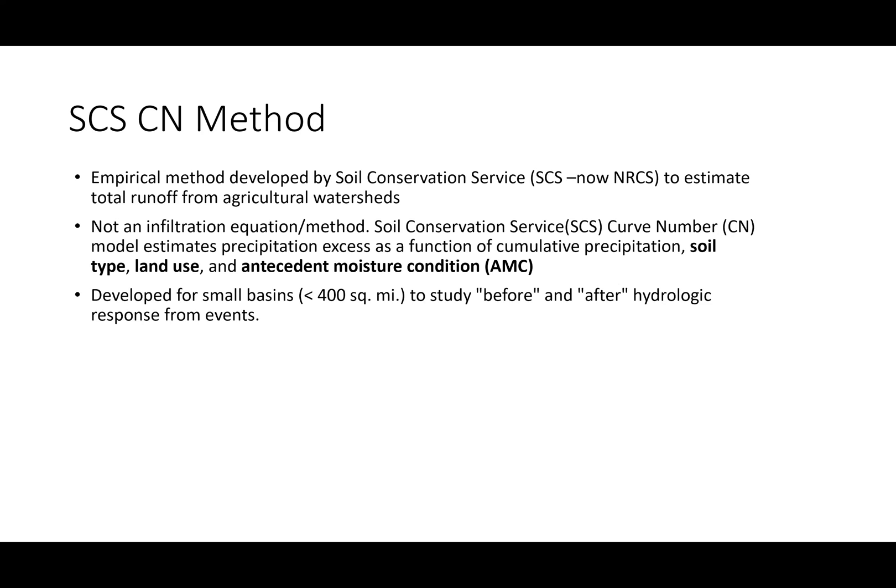The amount of direct runoff or excess rainfall that you get from total rainfall is a function of cumulative rainfall or precipitation, soil type, land use, and antecedent moisture condition.